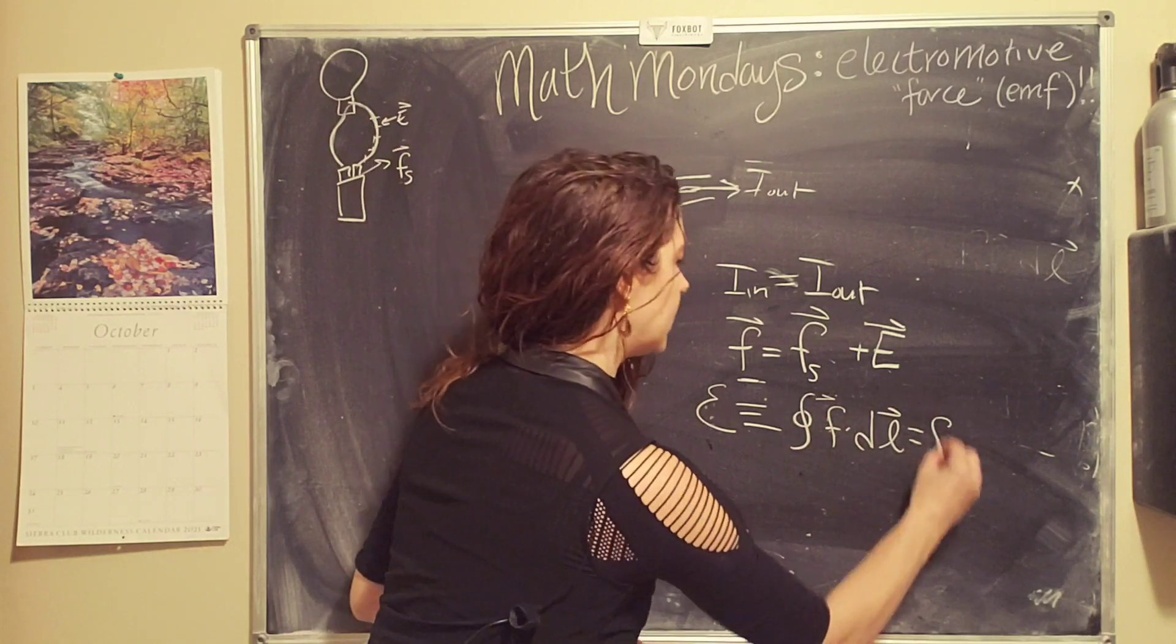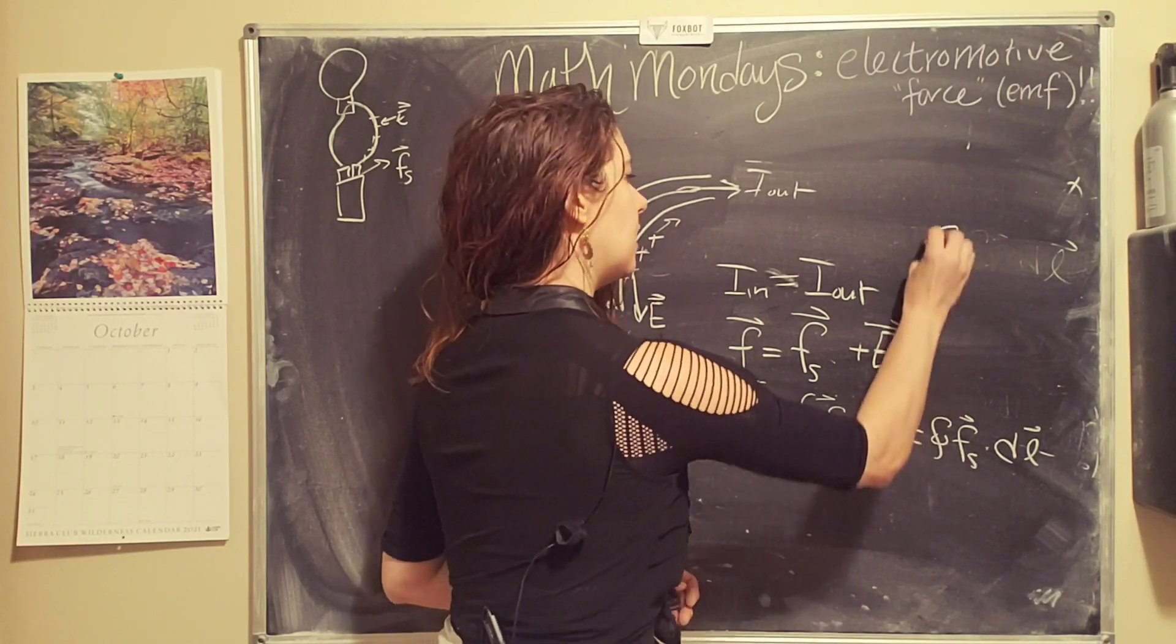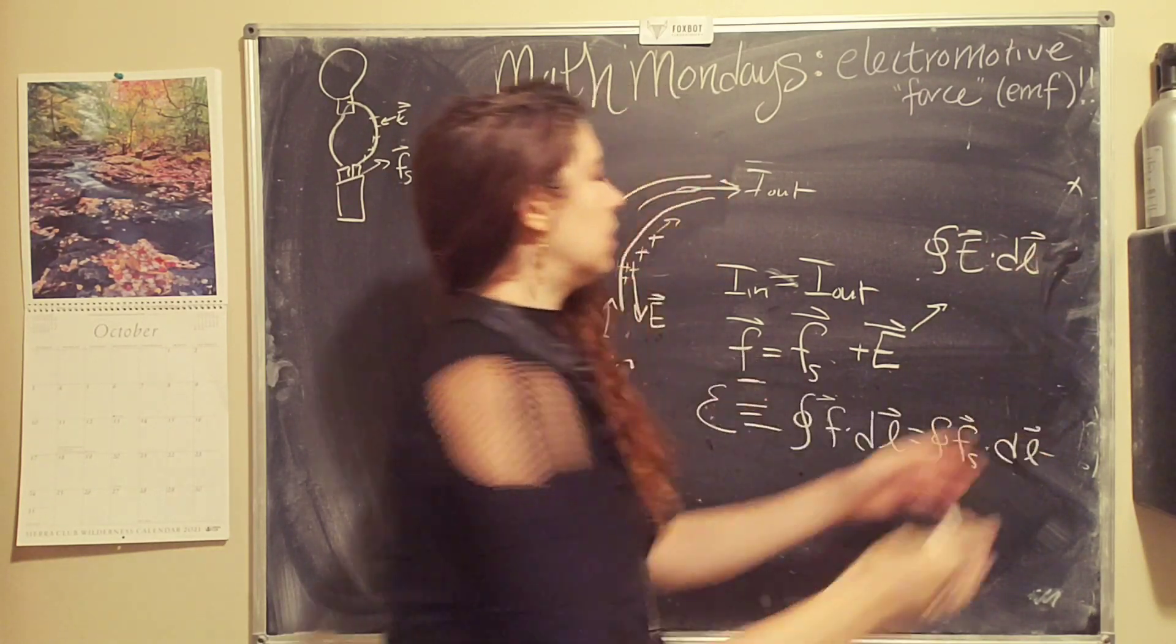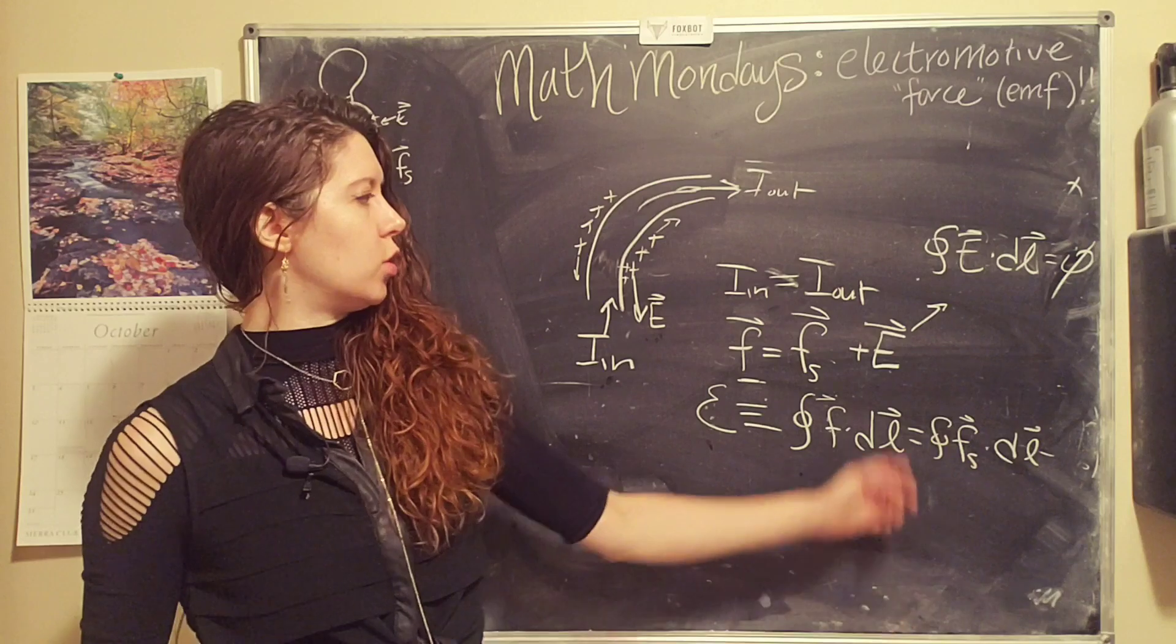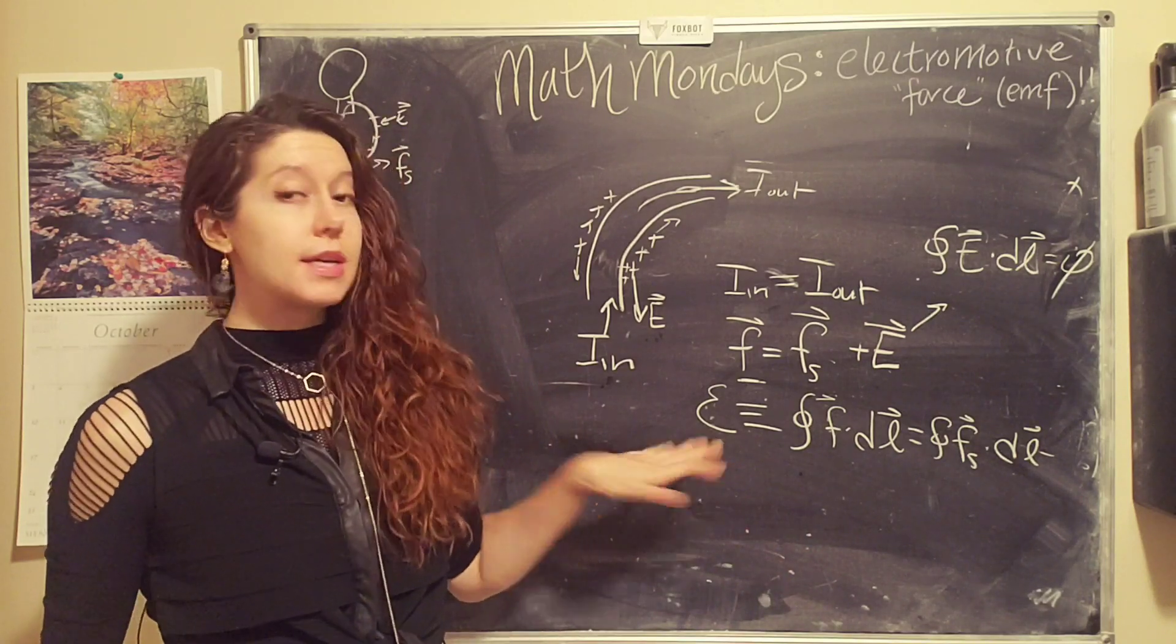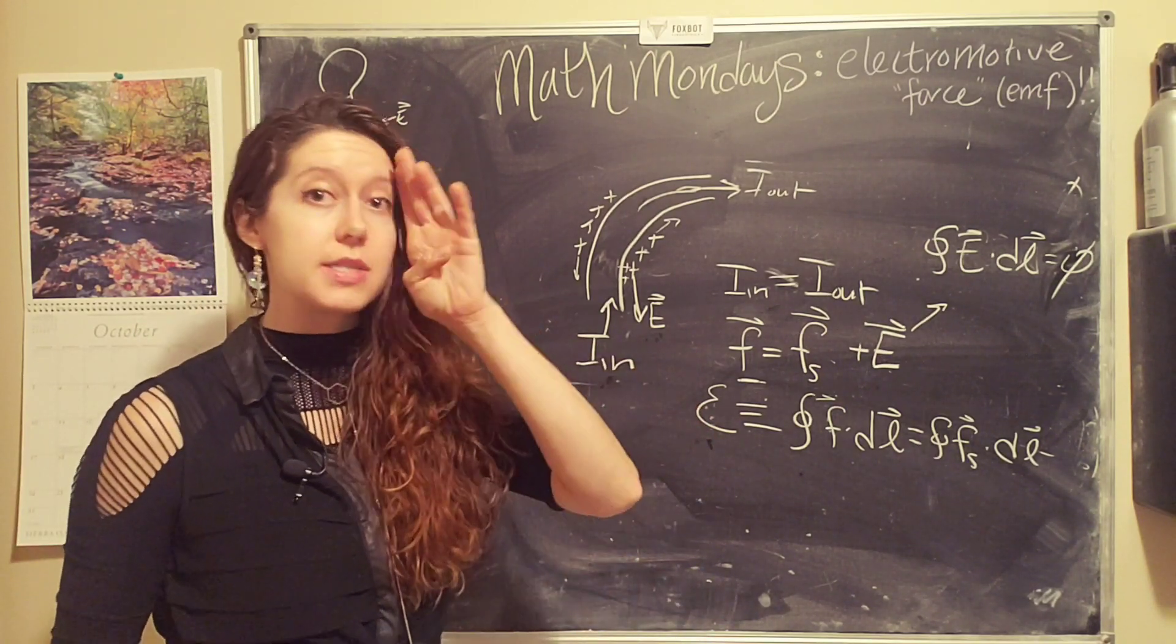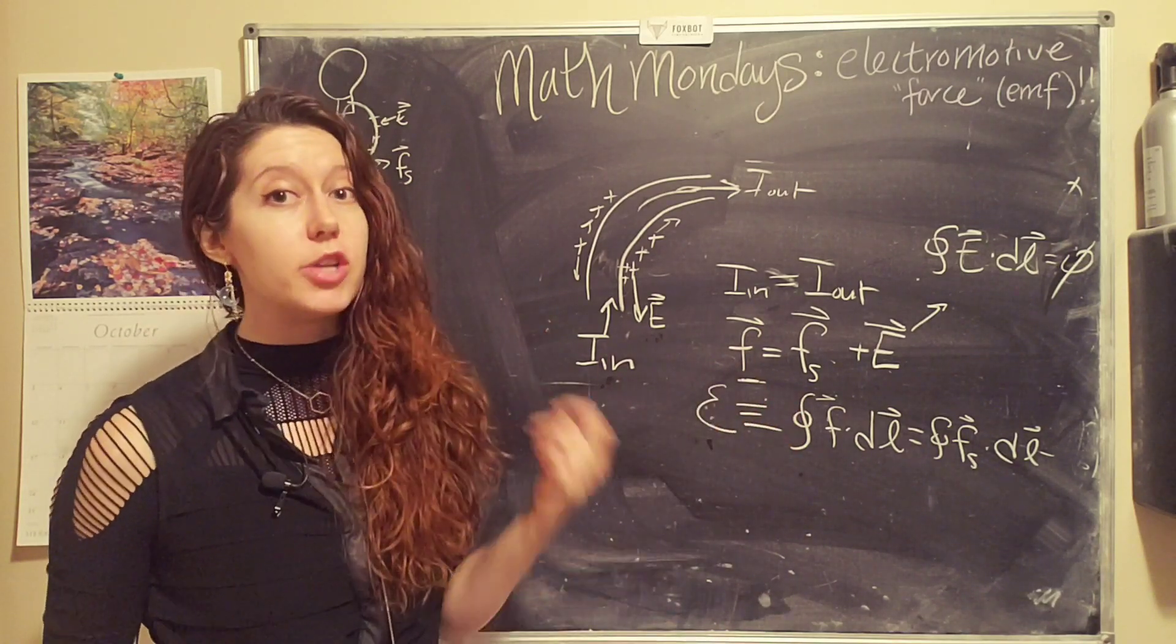We're going to define the EMF as the closed line integral of this total force throughout the path integral. But we can simplify that to just the force of our source, because if you remember from electrostatics, the closed loop integral of an electrostatic force around a path is zero. So that goes away, and that's what we're left with. And so this is the definition for electromotive force, or EMF.